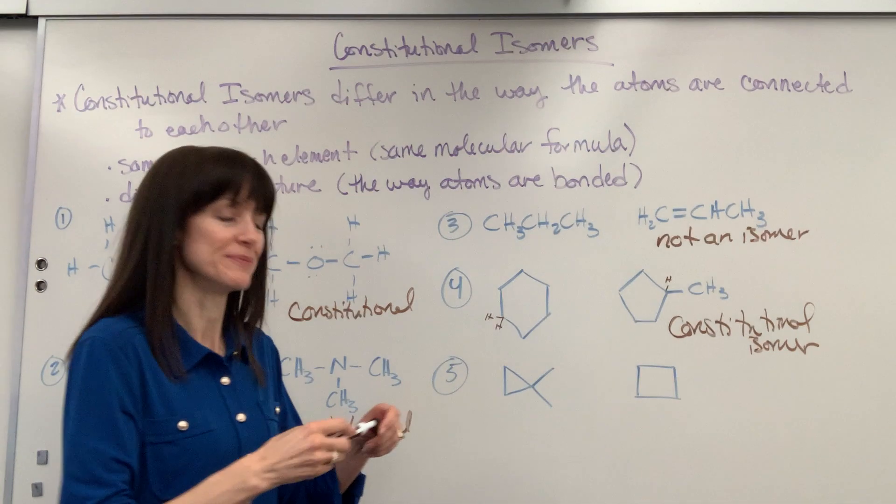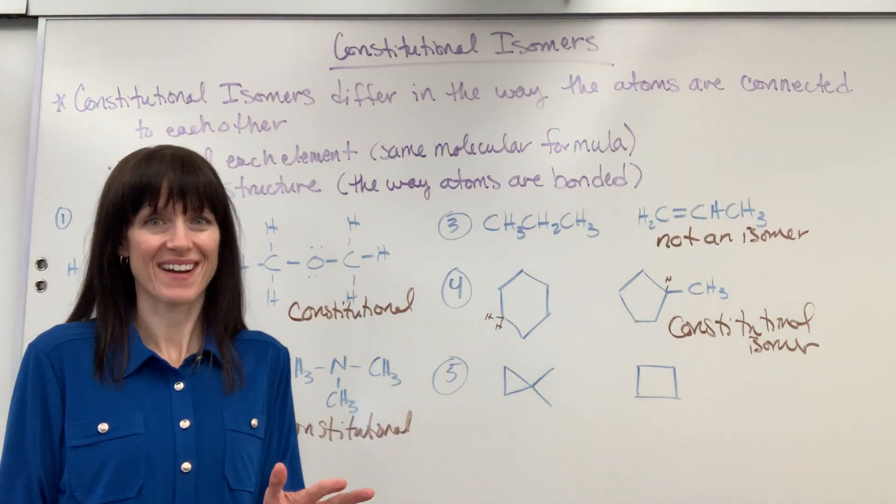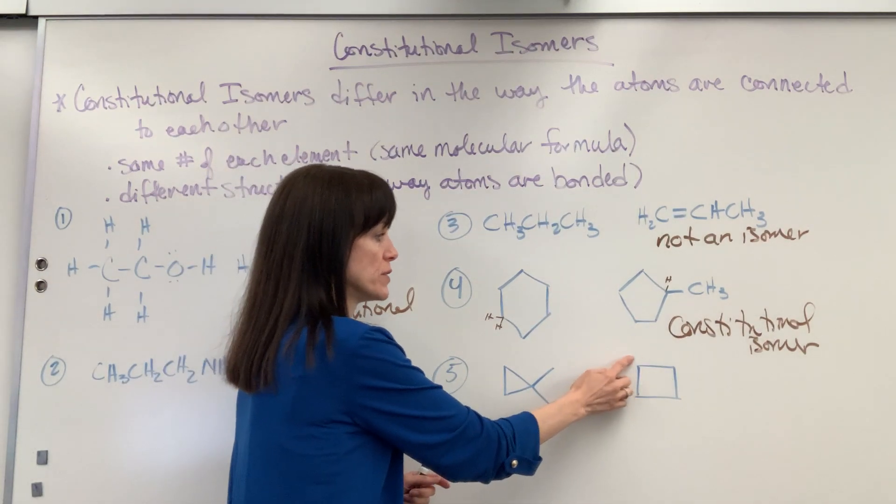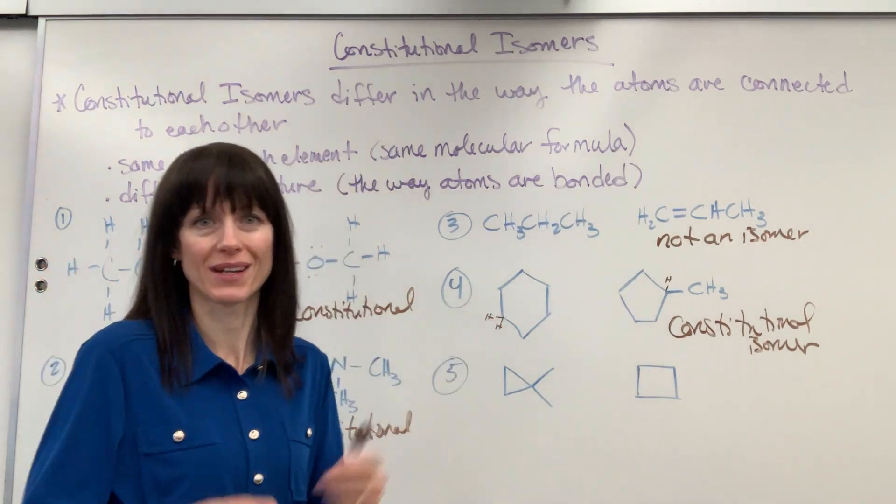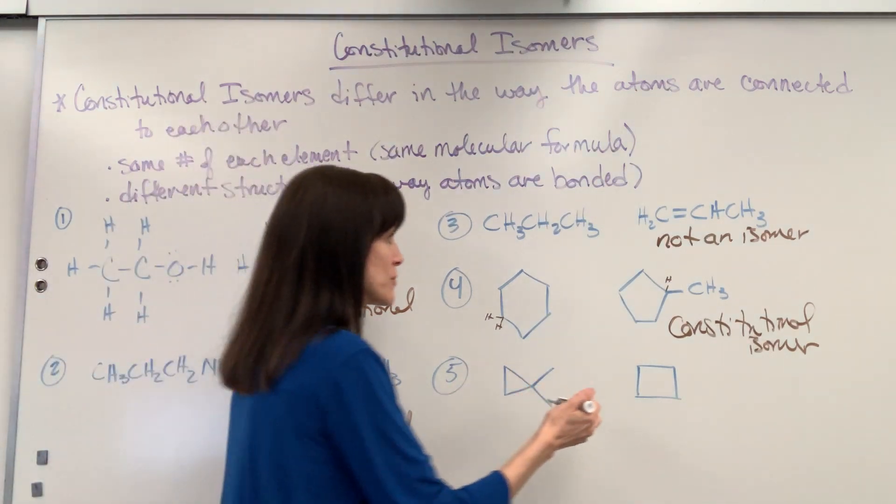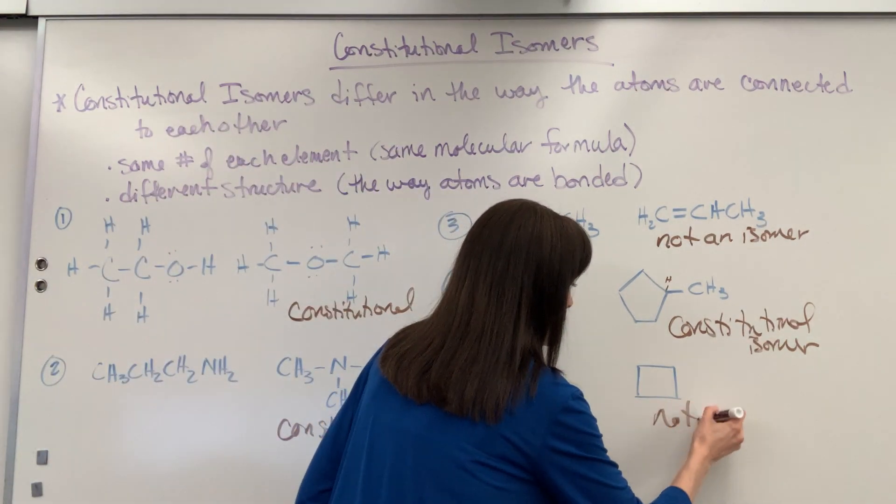Let's look at what we have down here. Let's begin by counting our atoms. I'll do carbon first. 1, 2, 3, 4, 5. And over here I've got 1, 2, 3, 4. Oh, I'll stop there. We don't have the same number of elements, so it's not going to be an isomer. So not an isomer.